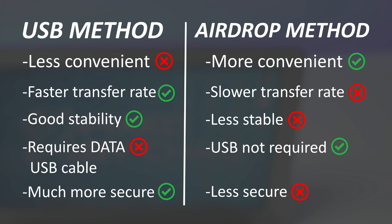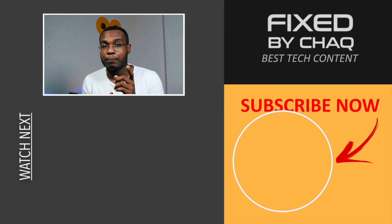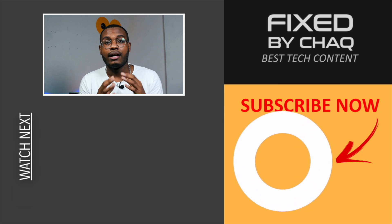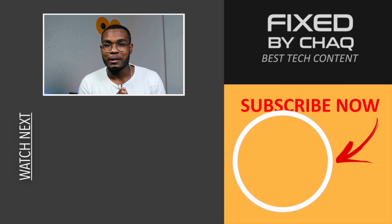Finally, regarding security: transferring files through USB is much safer than using AirDrop, because with AirDrop you need to turn on your visibility, making your phone visible to other devices nearby — which increases exposure to hackers in public places. Make sure you use a USB cable in public to avoid that risk. If this video helped you, don't forget to subscribe, leave a comment below, and like the video. See you next time.